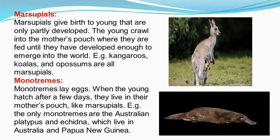Examples of marsupials include kangaroos, koalas, polar bears, and opossums. The third group is monotremes — also called egg-laying mammals. Monotremes lay eggs. When the young ones hatch from the eggs after a few days, they grow up in their mother's pouch, where there are mammary glands that feed them.